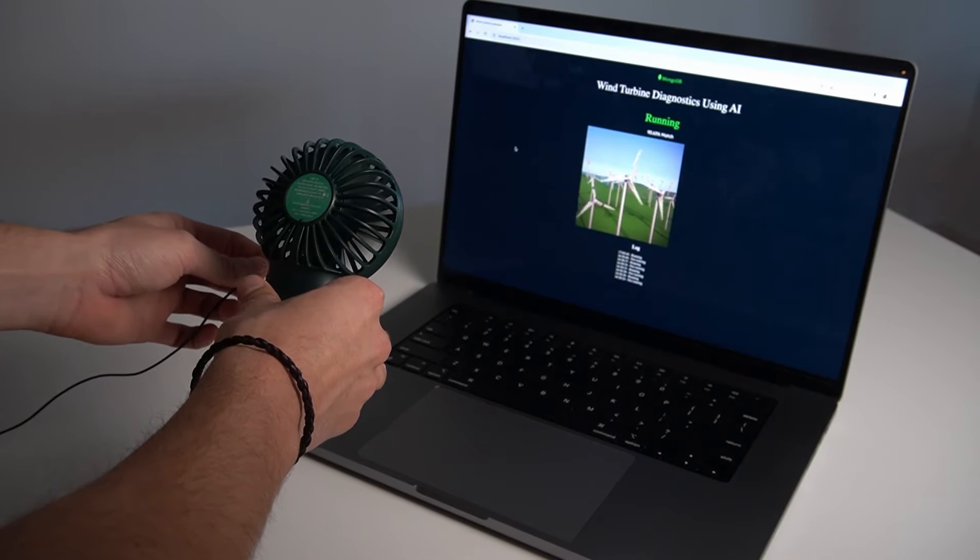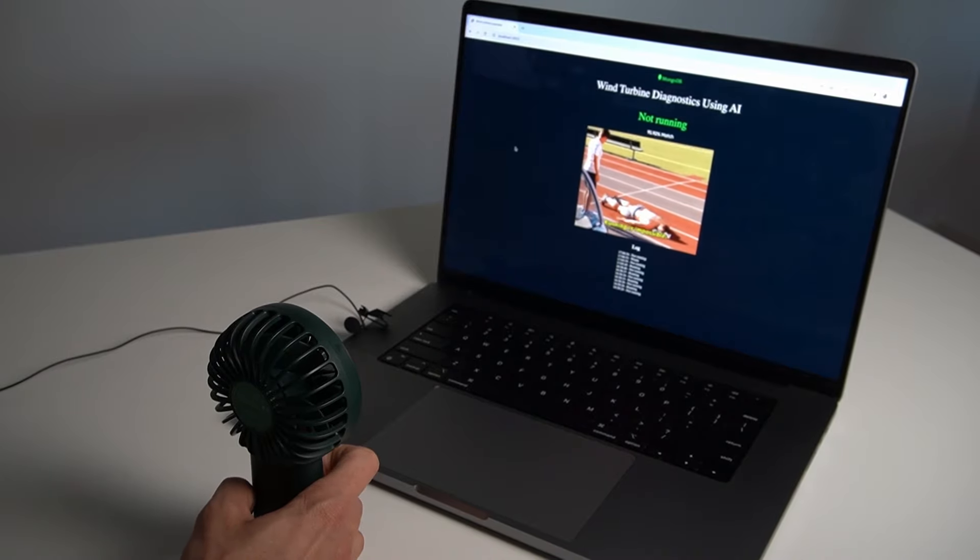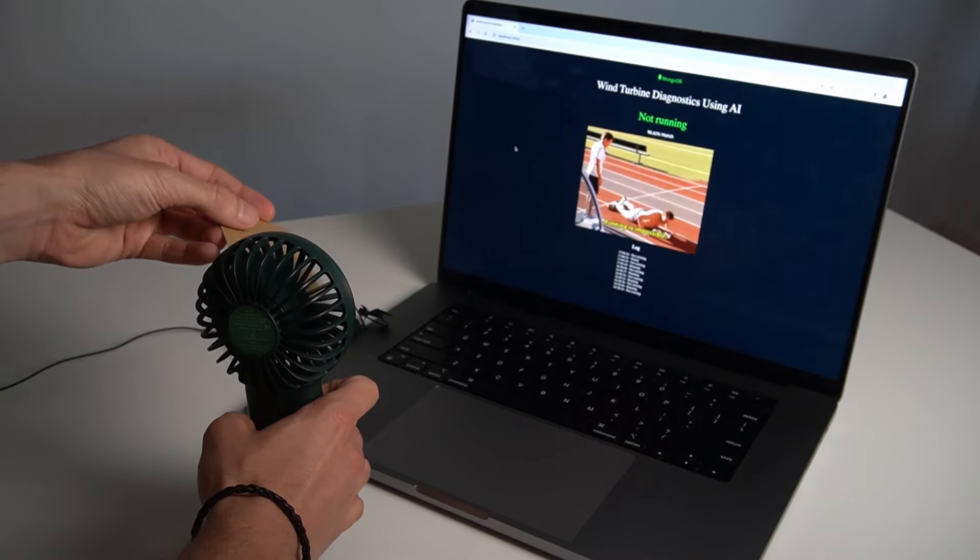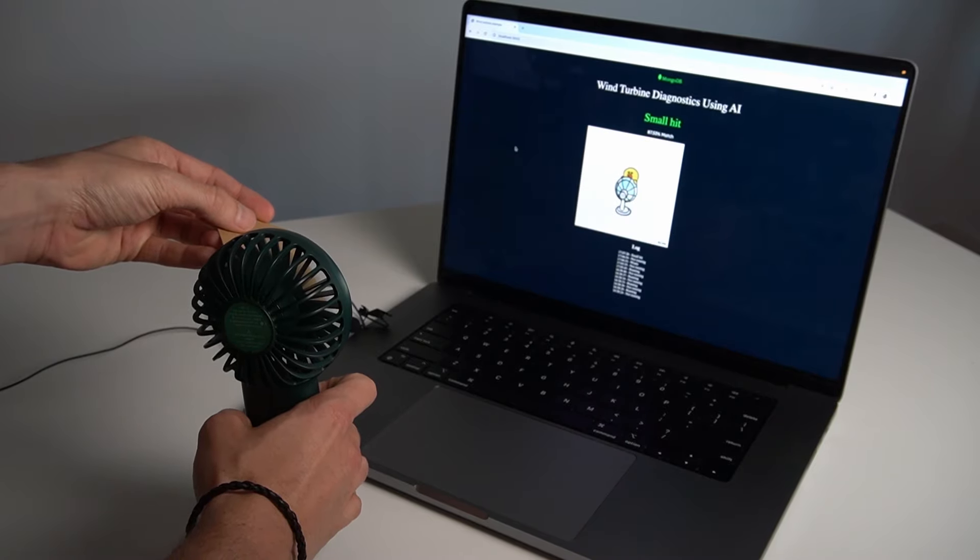Now, if I introduce an obstruction into the fan, listen closely as the sound alters. Simultaneously, the app detects this change in real-time, signaling a minor impact on the fan.